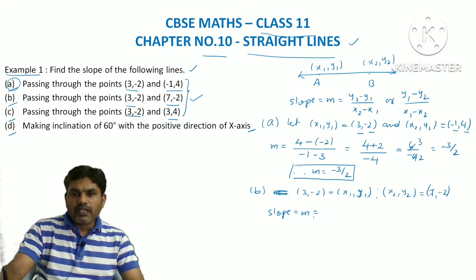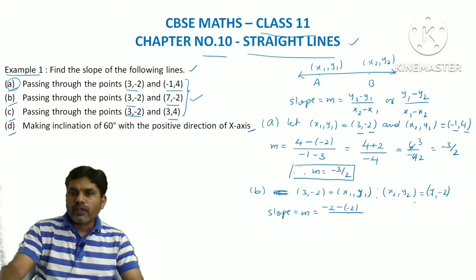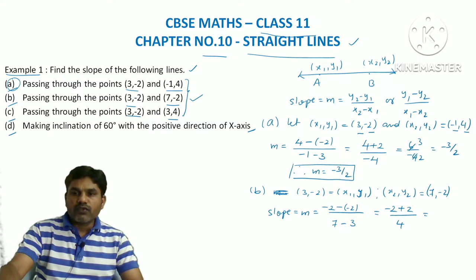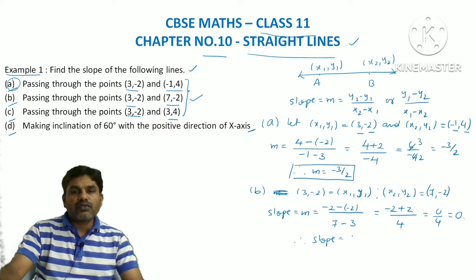So y2 is -2, y1 is -2, x2 is 7, and x1 is 3. Therefore m = (-2 - (-2)) / (7 - 3) = (-2 + 2) / 4 = 0 / 4 = 0. Therefore the slope of the line passing through the points (3, -2) and (7, -2) is 0.